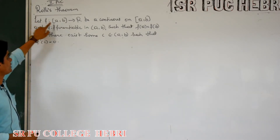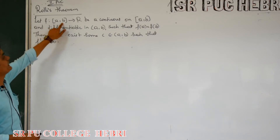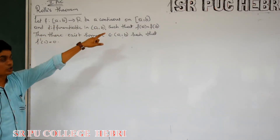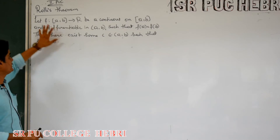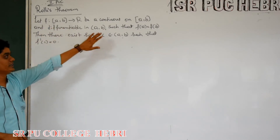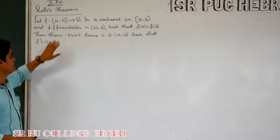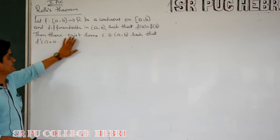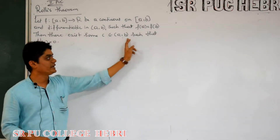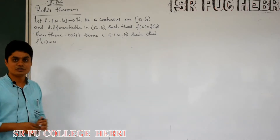Rolle's theorem statement: Let f from closed interval [a, b] to ℝ be continuous on the closed interval [a, b] and differentiable on the open interval (a, b), such that f(a) is equal to f(b). Then there exists at least one c between a and b such that f'(c) is equal to 0.